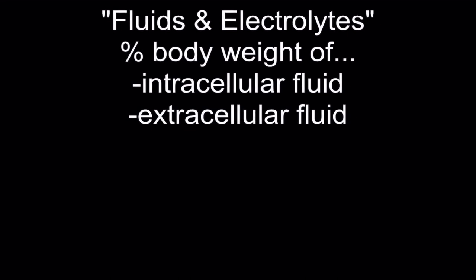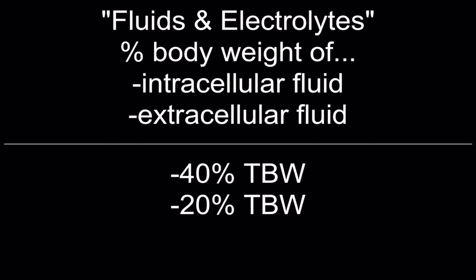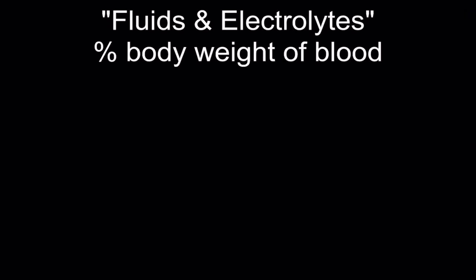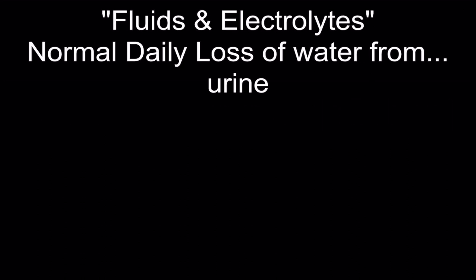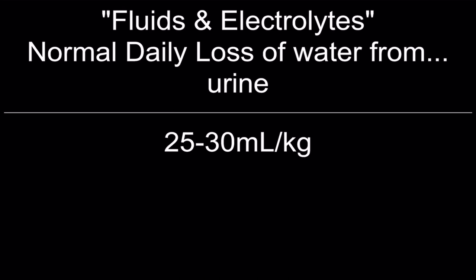Fluids and electrolytes: percent of body weight for intracellular fluid versus extracellular fluid — 40% total body weight for intracellular and 20% body weight for extracellular fluid. Percent of body weight of blood is about 7%. For example, a 70 kg man holds about 5 liters of blood. Normal daily loss of water from urine is 25 to 30 milliliters per kilogram.